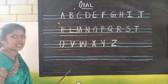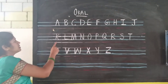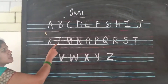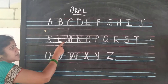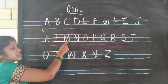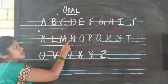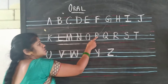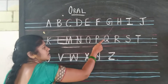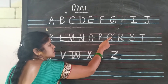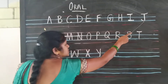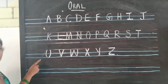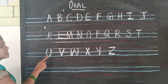One more time, I will repeat, children. Okay ma'am. A — A, B — B, C — C, D — D, E — E, F — F, G — G, H — H, I — I, J — J, K — K.